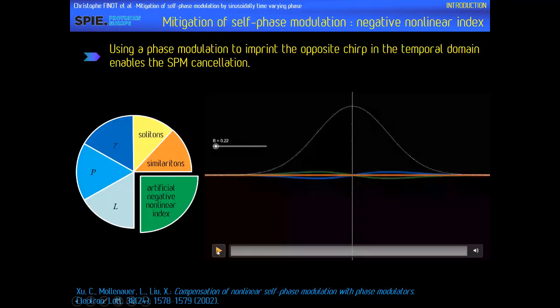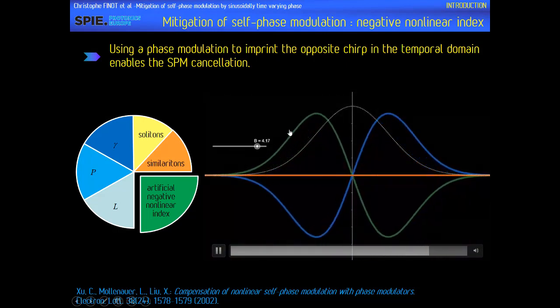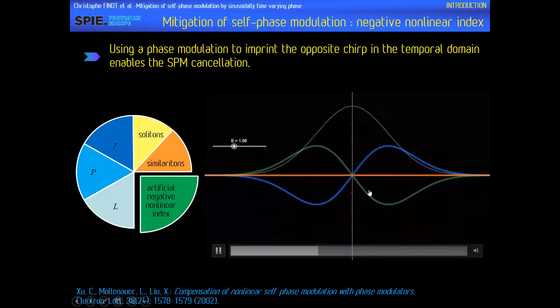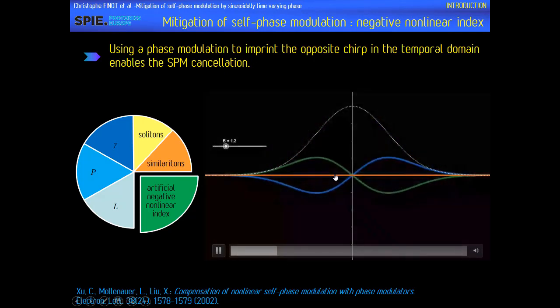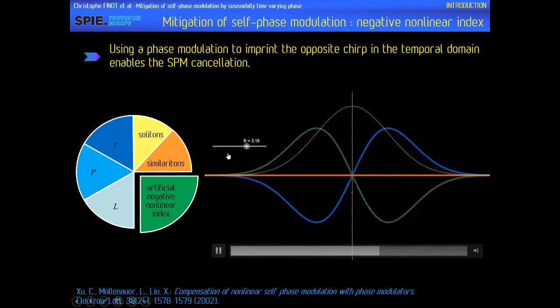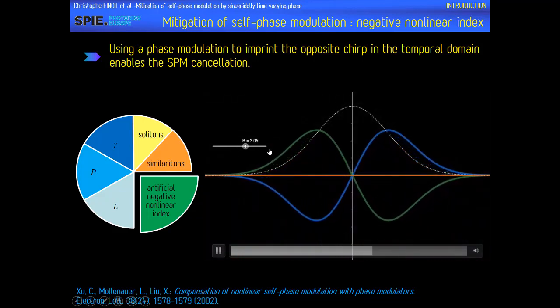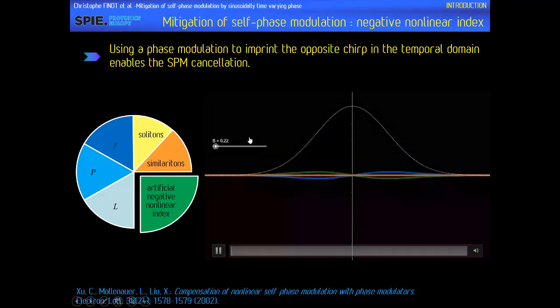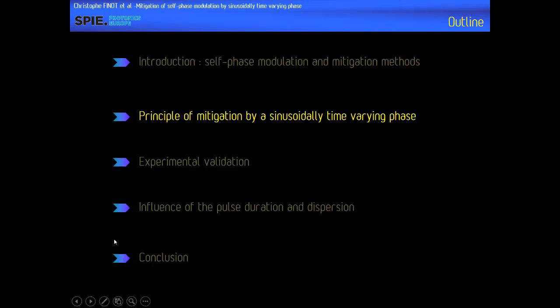We can see here how it works. The chirp induced by SPM is plotted in blue, and the external phase modulation induces a chirp plotted in green. When we add the two contributions, they perfectly compensate each other and the total chirp is zero over the whole pulse, working for a large range of temporal values. What we want to investigate is the influence of the modulation waveform that you will use.